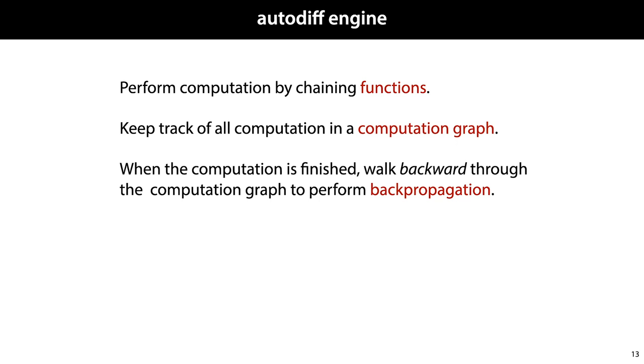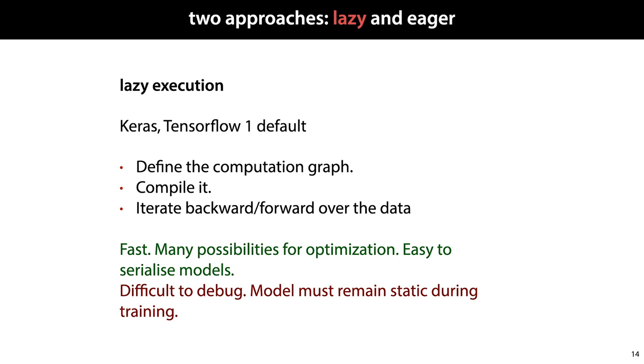There are two general ways of doing this, called lazy execution and eager execution. Lazy execution is used in Keras, and it was the default in TensorFlow 1. And the basic idea is that we define the computation graph, independent of the data. We compile it, and then we iterate backwards and forwards over the data. This is very fast, because we compile our computation graph, so we can optimize it. And it's easy to serialize models, because we have our computation graph defined up front. The drawback of this sort of model is that when something goes wrong during the forward pass, it's very difficult to trace the program error back to where you actually made the mistake. Another problem is that the model needs to remain static during training, because we compile it before we see the data, so we cannot change the structure of the model based on what we see in the data.